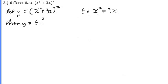If we differentiate what's in the brackets, dt/dx is equal to 2x + 3.